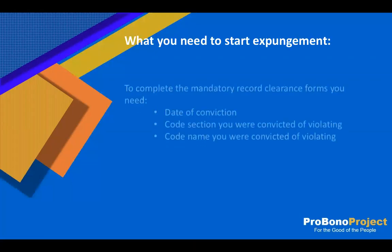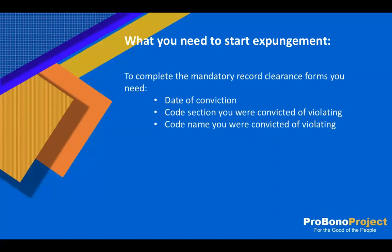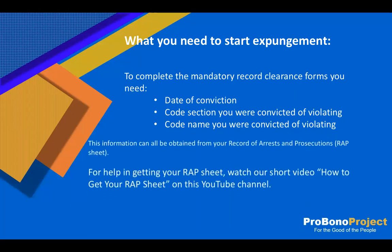The information you will need to start the expungement and record clearance process includes the date of your conviction, the code section you were convicted of violating, and the code name you were convicted of violating. This information can all be obtained from your record of arrests and prosecutions, or your rap sheet. To learn how to obtain your rap sheet, please check out our short video presentation on how to get your rap sheet on this YouTube channel. Always be aware of whether or not you have outstanding warrants for your arrest prior to being fingerprinted or filing anything with the court.